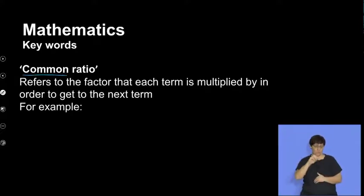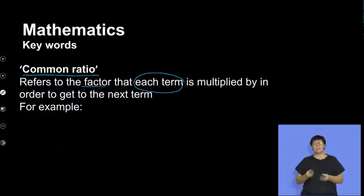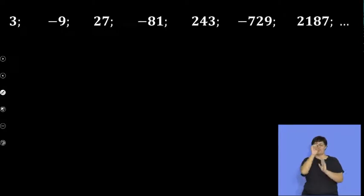A common ratio refers to the factor that each term is multiplied by in order to get the next term. This is a specific number that I multiply each term value by to get the next term. Let's have a look at our first example.